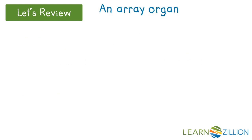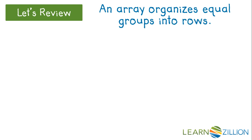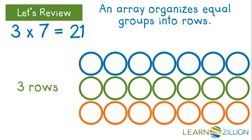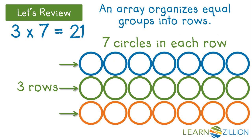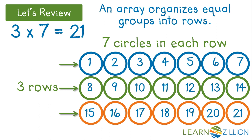We also know that an array is an arrangement of equal groups. Each group is in its own row, and the rows go across the array. This array has three rows with seven circles in each row. The array shows three times seven — three equal groups of seven circles. There are twenty-one circles in all. Three times seven equals twenty-one.